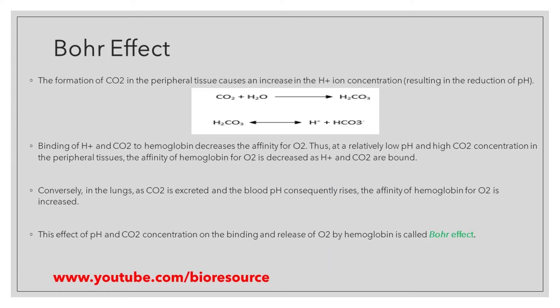Let's go into the details about the Bohr effect. The formation of carbon dioxide in the peripheral tissue causes an increase in hydronium ion concentration, which results in the reduction of pH. Once the concentration of H⁺ ions increases, the pH will be reduced. The reaction goes as follows: carbon dioxide combines with water to give carbonic acid, which then splits into H⁺ and HCO3⁻.